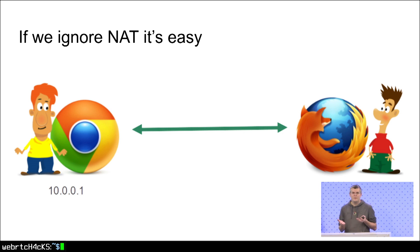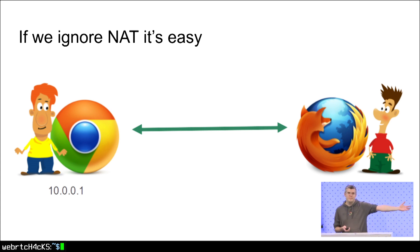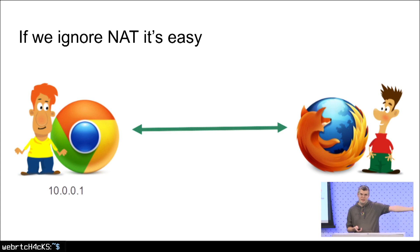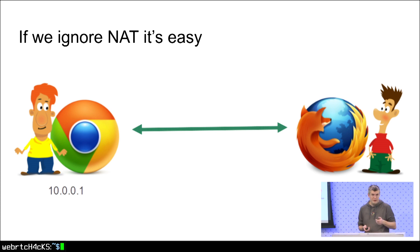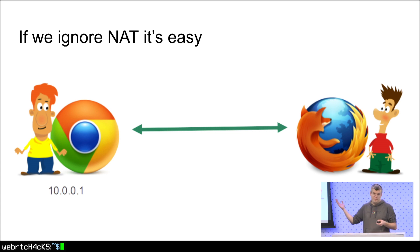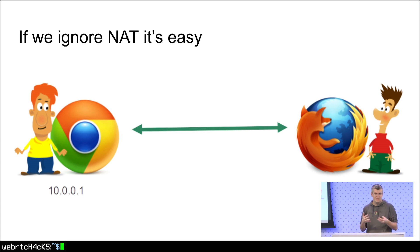But if we ignore the NAT thing, it's pretty easy. One browser says my IP is 10.0.0.1, I'm listening on port 12345. The other browser says I'm 10.0.0.2 on its ports. And then they send some STUN packets and establish a connection.